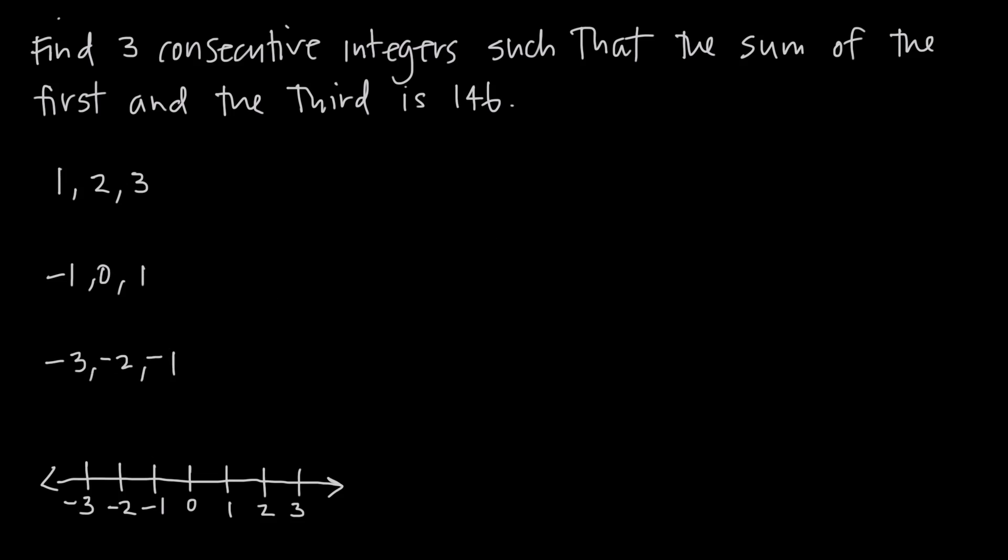If you're not sure whether three numbers are consecutive integers, you can always plot them on your number line. For example, 1, 2, and 3. If we start at the first integer and then go to the other two, this is 1, 2, and 3. These three integers here, and because we can connect them like this, we know they're consecutive.